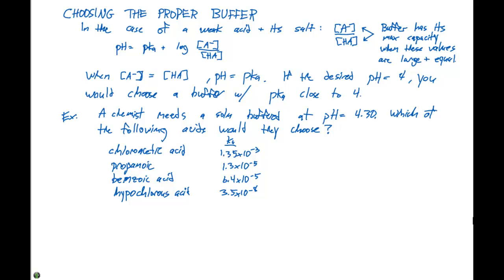First thing we need to look at is the pKa. Let's take each of these Ka values, do the negative log, and we'll calculate the pKa. Here we'll have 2.87, 4.89, 4.20, and 7.5 for our values.